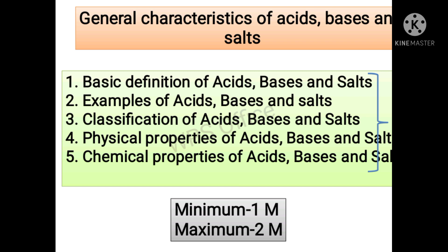General characteristics of acids, bases and salts are started. In this we have to talk about basic definitions, examples and classification. In this classification we have to talk about strong acid examples and strong basis examples. Now we have to talk about physical properties.